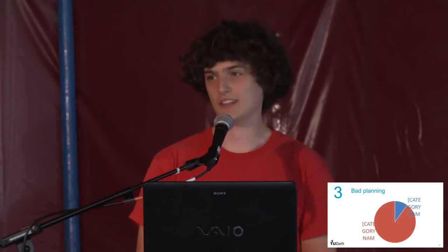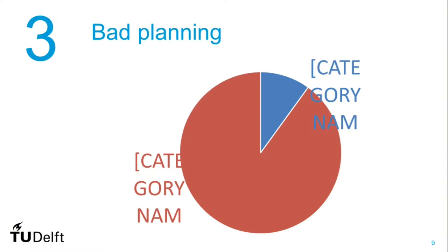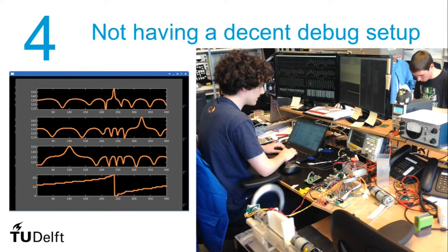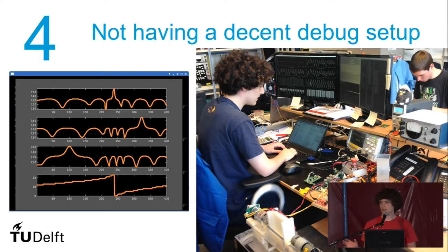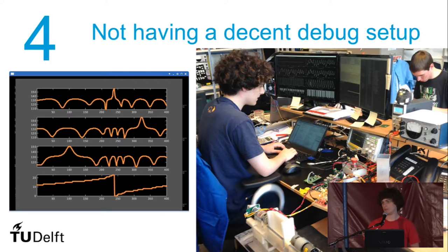Problem four: not having a decent test setup. When you're building a project like this, your desk will unavoidably end up looking like a mess. It is very tempting to just throw together a quick debug setup because you think that testing will only take five minutes and then you're done with it. It will not. So when you're building a debug setup, you really have to take great care at both hardware and software. For hardware, you can do simple things — for example, when connecting two PCBs, make a proper cable. Don't just duct tape it together, because when you do and it doesn't work, you'll have no way of knowing whether it's the cable that broke or something is actually generally wrong.